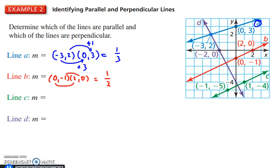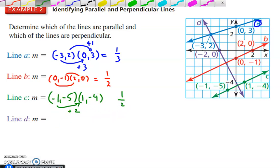Next, we have line C. Line C, the slope is negative 1 and negative 5. And then from there, we have 1 and negative 4. So change in y. From negative 5 to negative 4 is 1. From negative 1 to positive 1, the change here is plus 2. So 1 over 2.